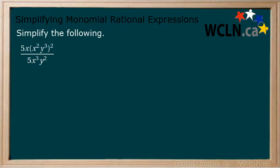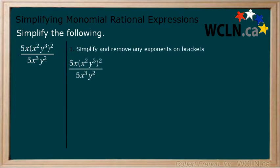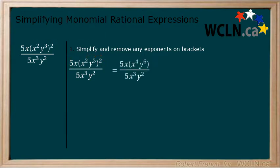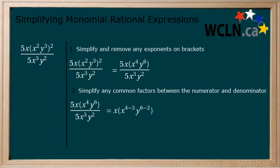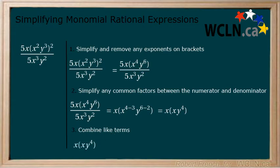Simplify the following monomial rational expression. Step 1: Simplify and remove any exponents on brackets. This step applies to our numerator. By applying the power of 2 to all of the terms in the brackets, we get 5x, x to the power of 4, y to the power of 6 for our numerator. Step 2: Simplify any common factors between the numerator and the denominator. First, the 5's cancel. Then, using our exponent laws, we are left with x, x to the power of 4 minus 3, y to the power of 6 minus 2, to get x times x times y to the power of 4. Step 3: Combine like terms. We combine our two x's to get x squared y to the power of 4, which is our simplified expression.